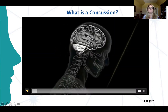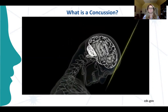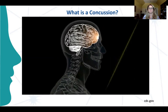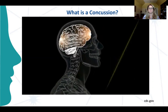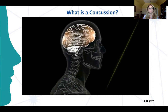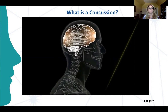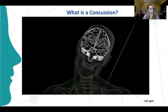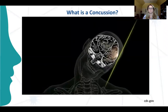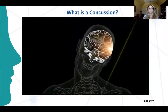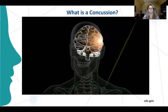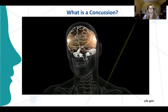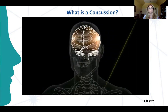A concussion is a type of traumatic brain injury, or TBI, caused by a bump, blow, or jolt to the head, or by a hit to the body that causes your head and brain to move rapidly back and forth. This sudden movement can literally cause the brain to bounce around or twist in the skull, stretching and damaging the brain cells and creating chemical changes in the brain. These chemical changes make the brain more sensitive to any increased stress or injury until it fully recovers.